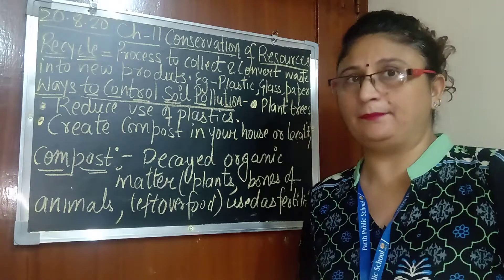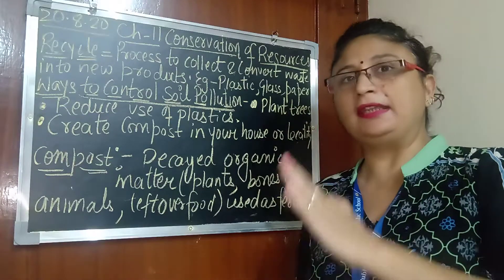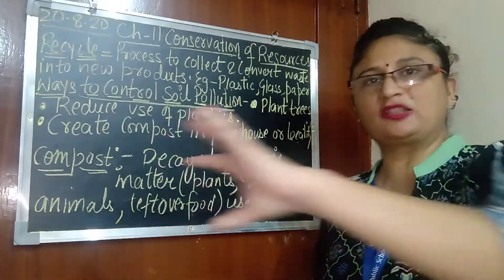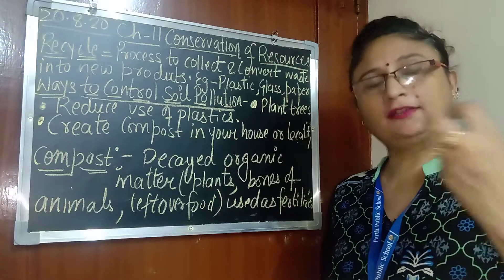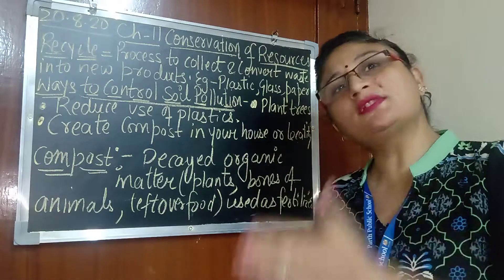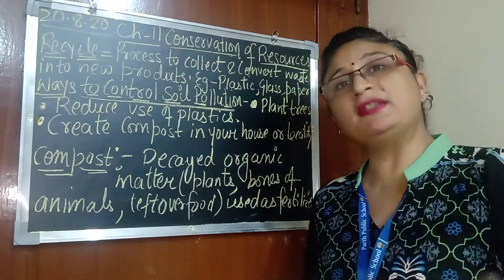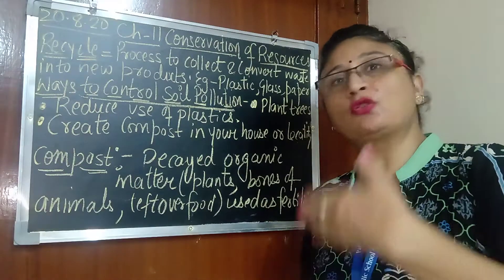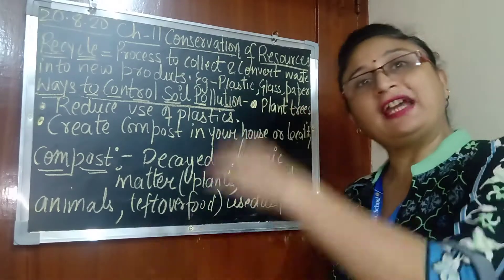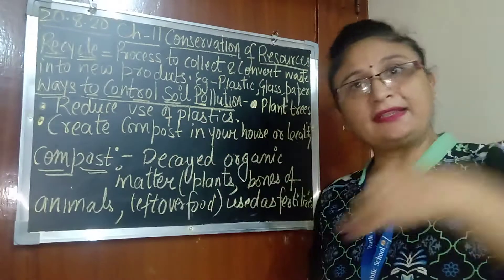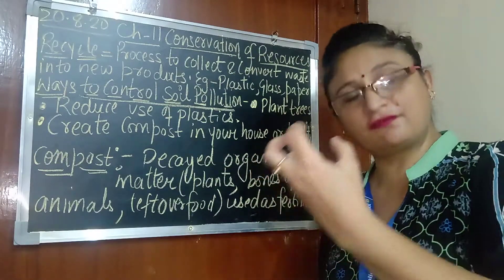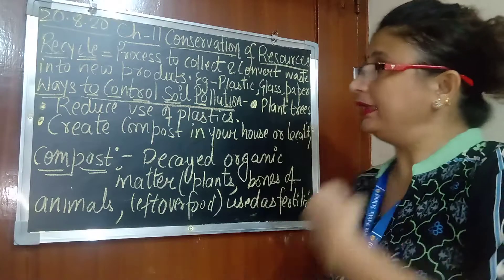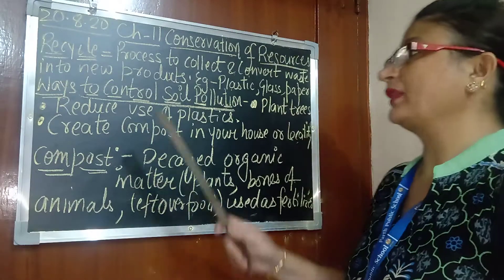The first method to control soil pollution is by planting more and more trees. If we take two pieces of land — one is barren with no vegetation, and on the other land we have grown grass or trees — if there is heavy wind or rain, the barren soil will erode, moving from one place to another. But where we have grown grass or trees, the roots will bind the soil and prevent soil erosion.